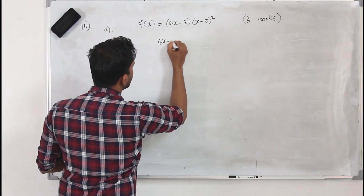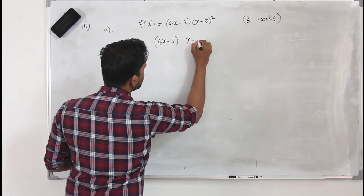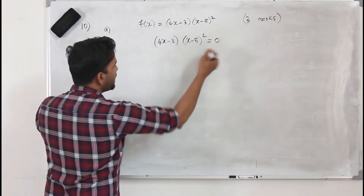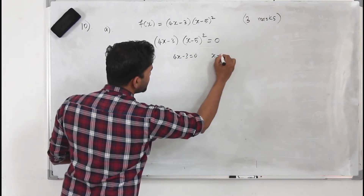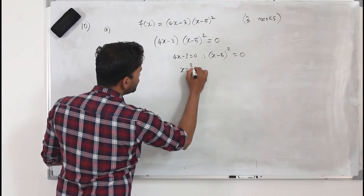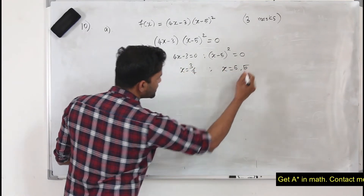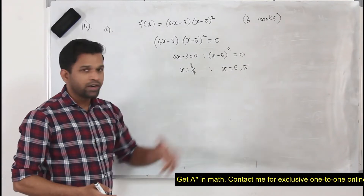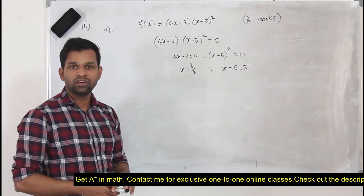Take the function (4x minus 3)(x minus 5) squared equals zero. When you equate them separately: 4x minus 3 equals zero gives x equals 3/4. And x minus 5 squared equals zero gives x equals 5, which is a repeated root. So we have two x-intercepts: x equals 3/4 and x equals 5.